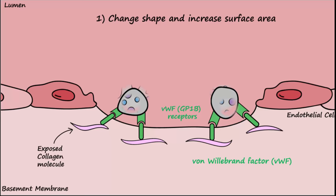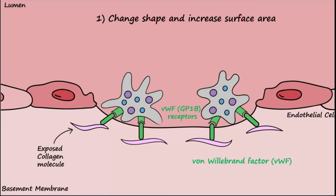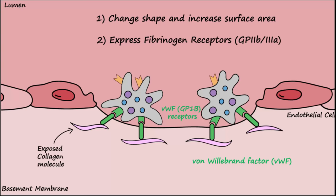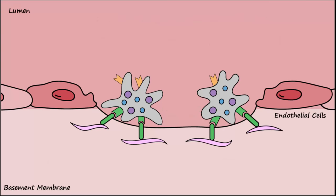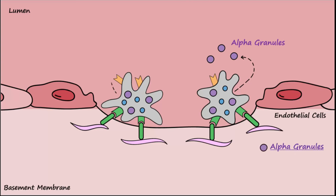Activated platelets change shape to increase their surface area. Activation of the platelets also causes the platelets to express active fibrinogen receptors, also called GP2b3a receptors. The anchored, activated platelets then begin to secrete a variety of chemical compounds from granules called alpha and dense granules.